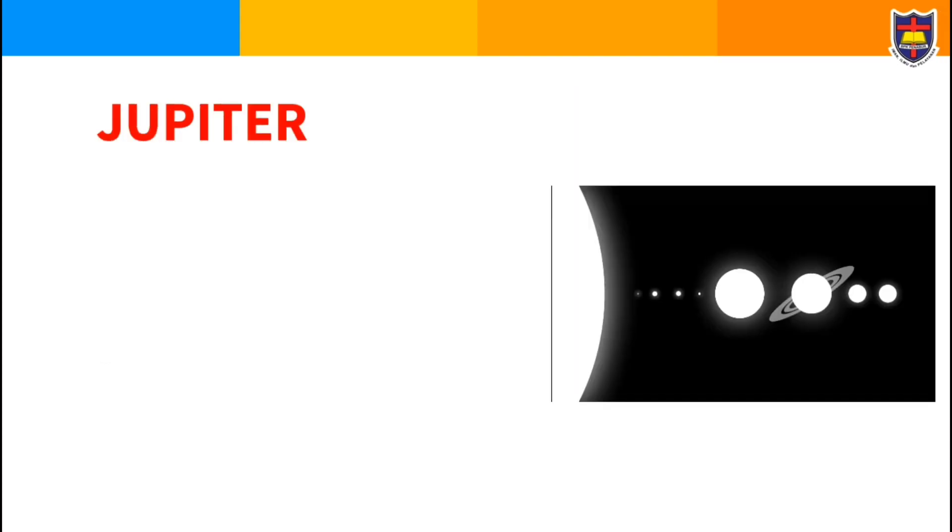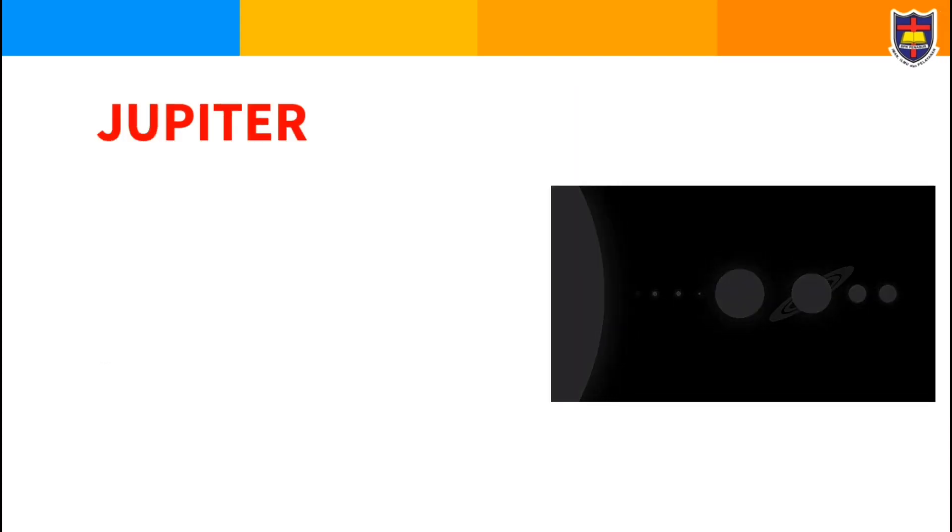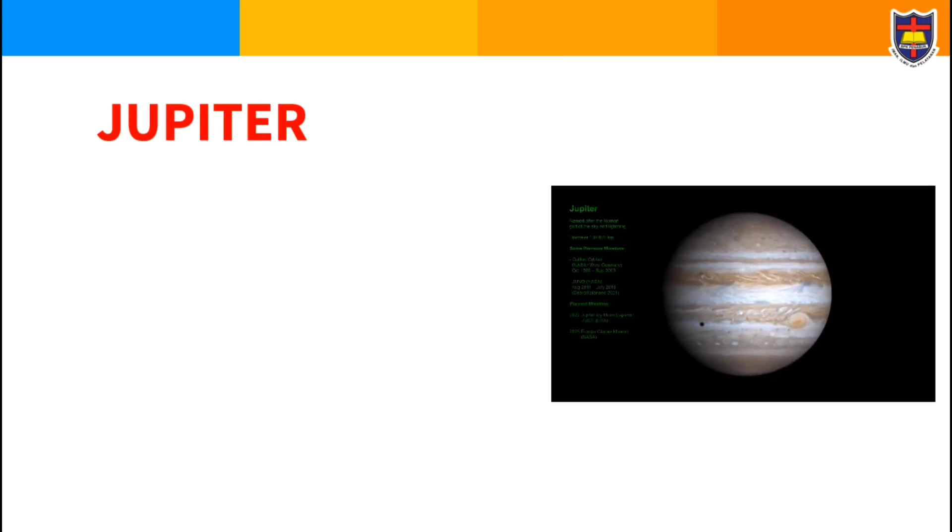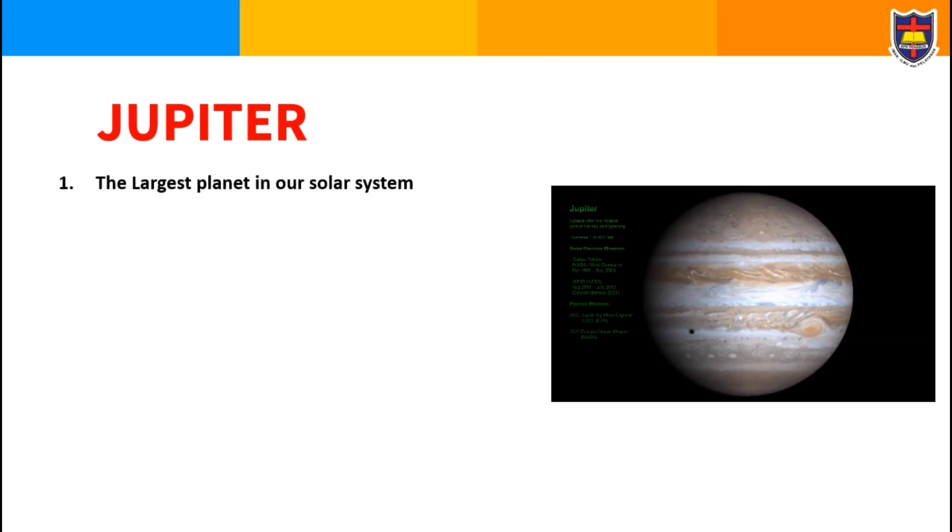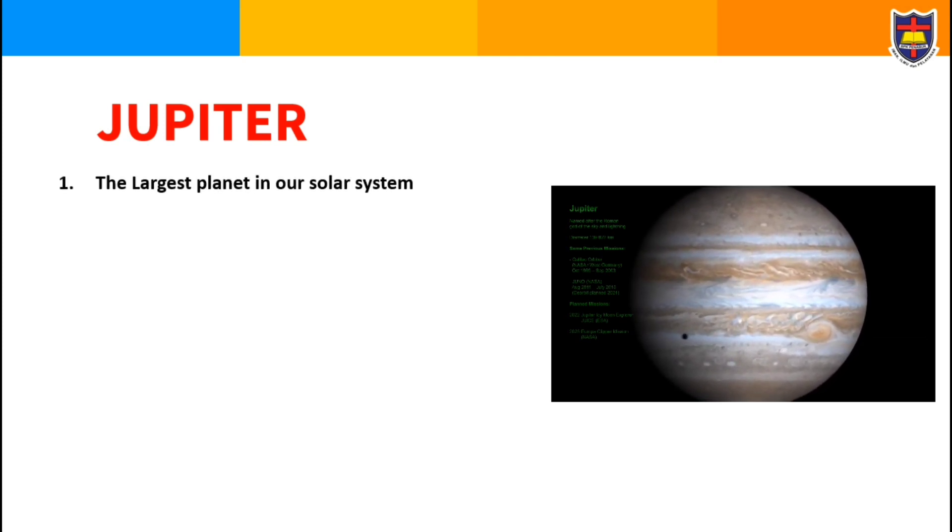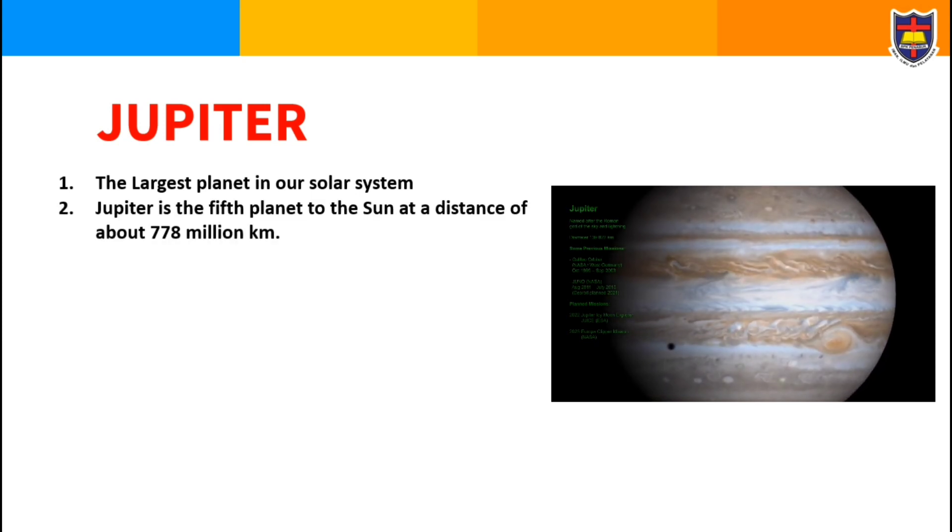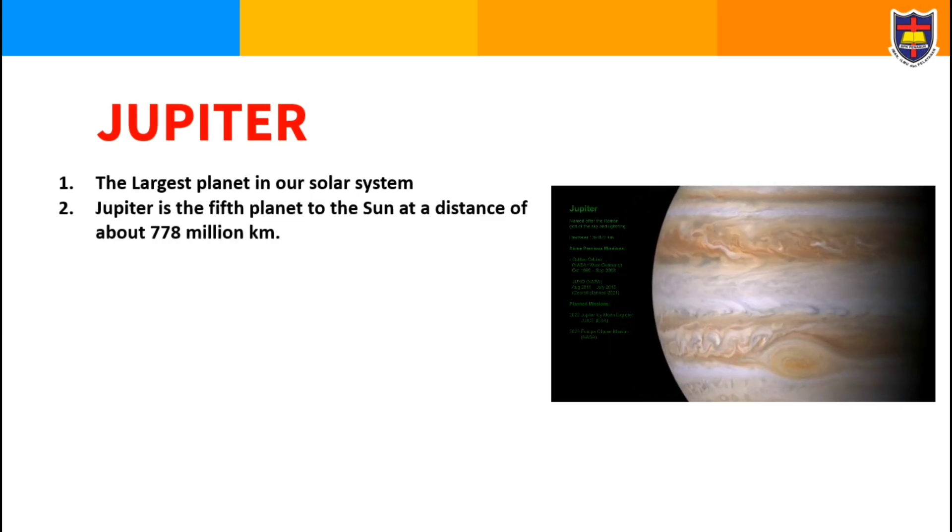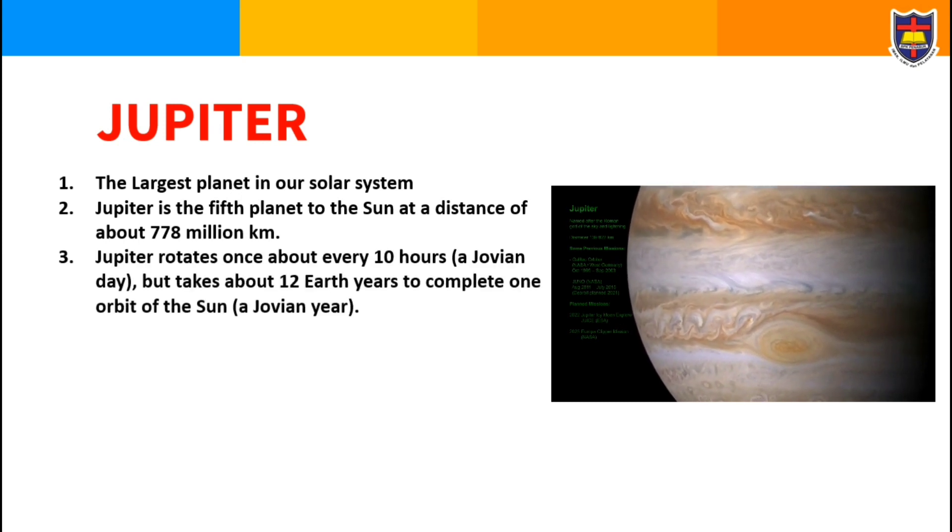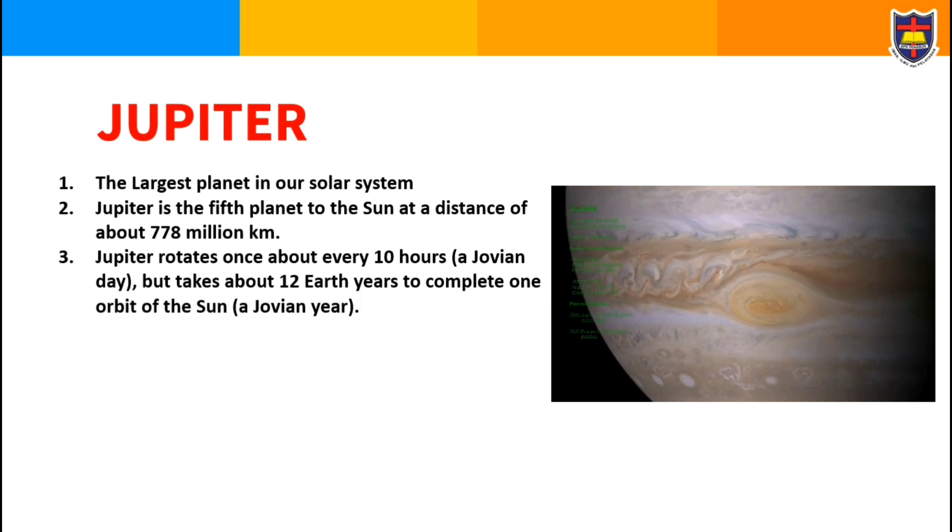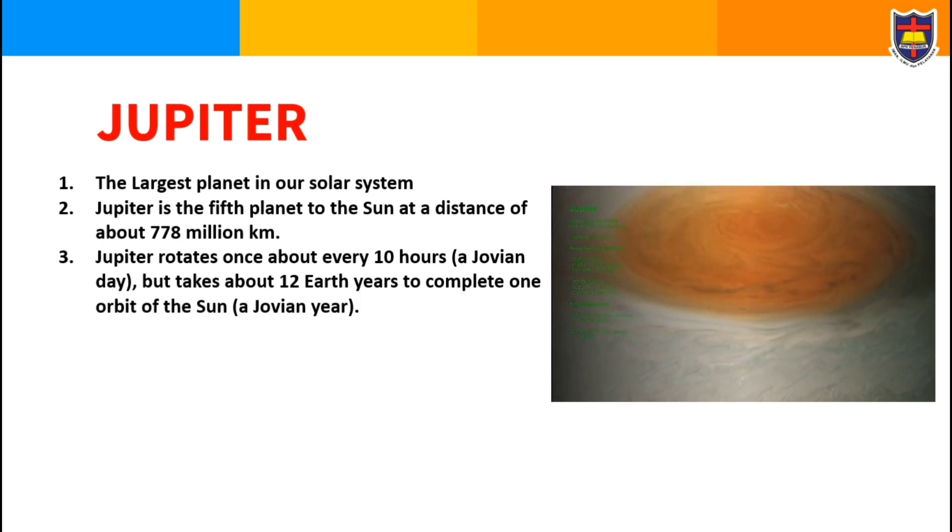Okay guys, guess what? What's next? Yeah, correct: Jupiter. The fifth planet is Jupiter, the largest planet in our solar system. Jupiter is the fifth planet to the Sun at a distance of about 778 million kilometers. Jupiter rotates once about every 10 hours but takes about 12 Earth years to complete one orbit of the Sun.